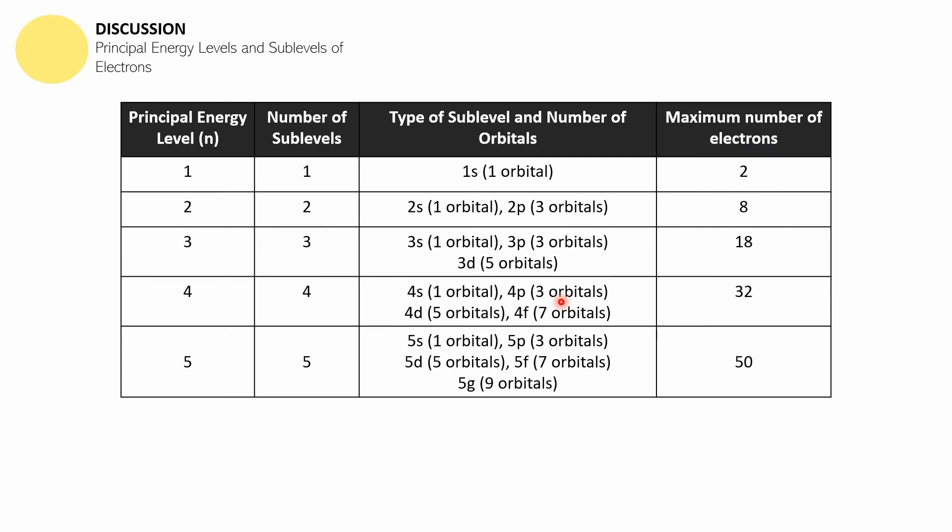The next part is a discussion about the principal energy levels and sublevels of the electron. This is a table. Each column is headed by the following: the first column shows the energy levels—the principal energy levels one, two, three, four, and the fifth energy level. The second column shows the number of sublevels. For the first energy level you only have one sublevel. For the second energy level you have two sublevels. The only sublevel you'll find in principal energy level one is 1s. The two sublevels in principal energy level two are 2s and 2p, which have one orbital and three orbitals respectively. For every orbital you can accommodate two electrons, and three orbitals can accommodate six electrons.